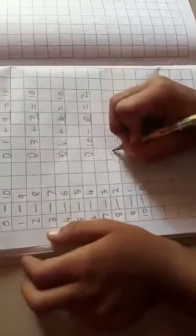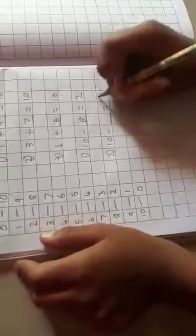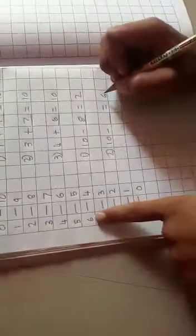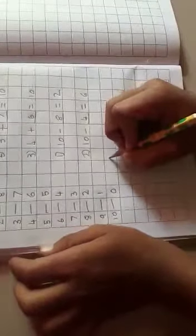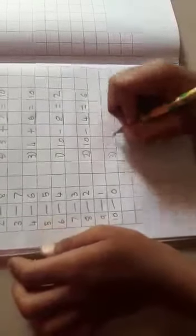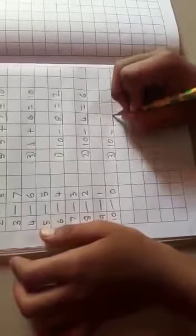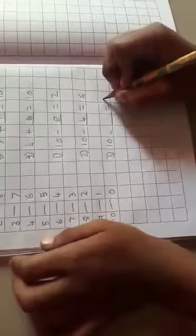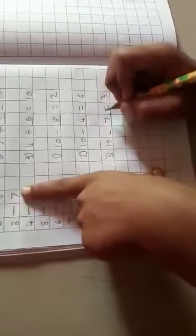Second example. 10 minus something is equal to 6. The answer is 4. Example 3, 10 minus something is equal to 3. The answer is 7.